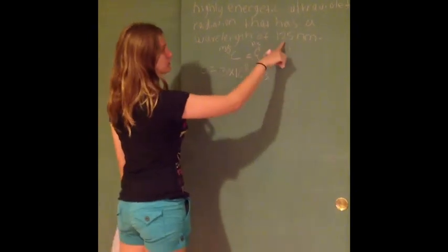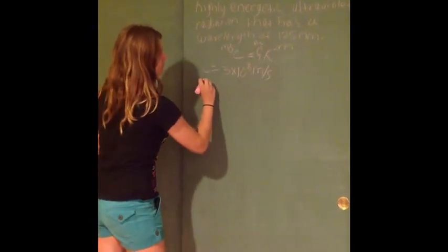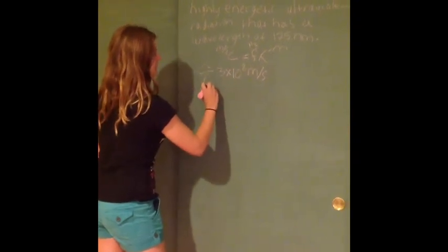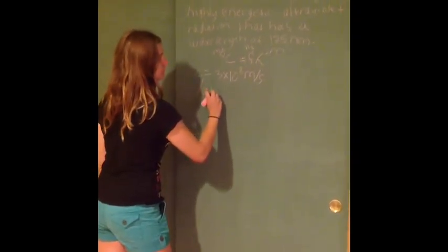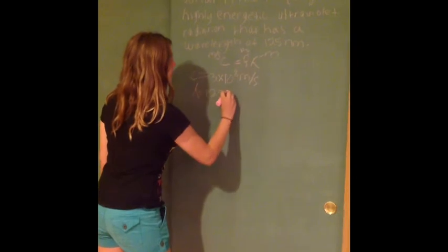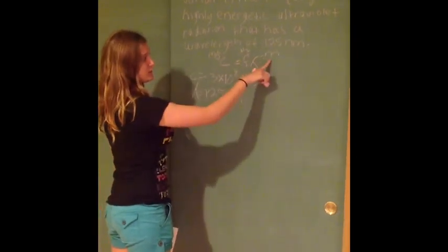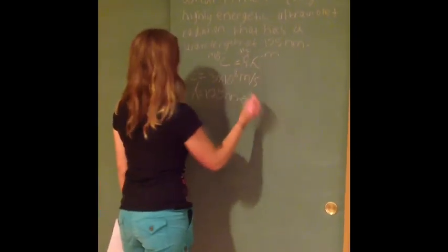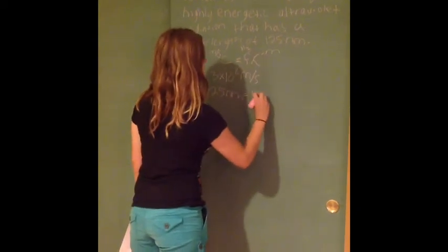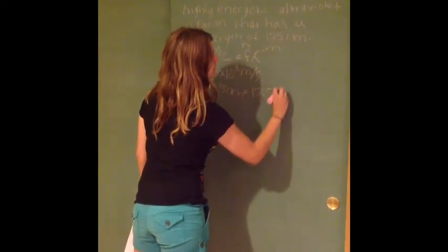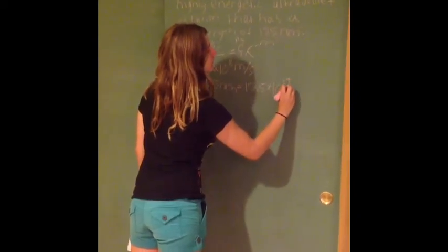The 125 nanometers is the wavelength, but since it's nanometers, we have to convert it to meters. This equals 125 times 10 to the negative ninth meters.